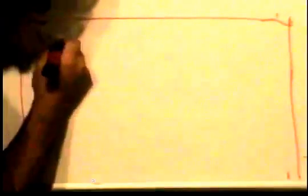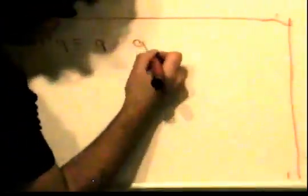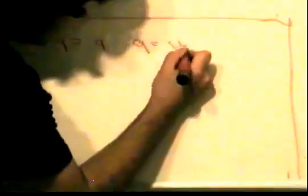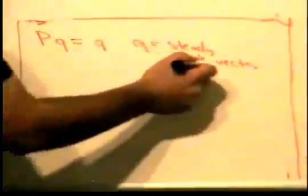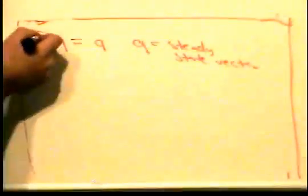Today we're going to talk about steady state vectors. The definition says that if Pq = q, then q is the steady state vector. This means we have to find a vector q such that if we multiply by P, we're still going to get back q. This deals with stochastic matrices.